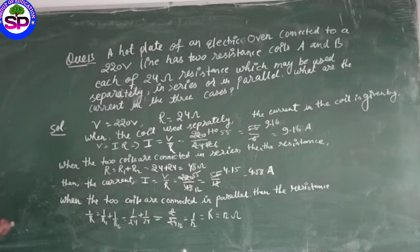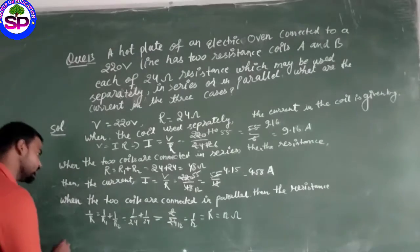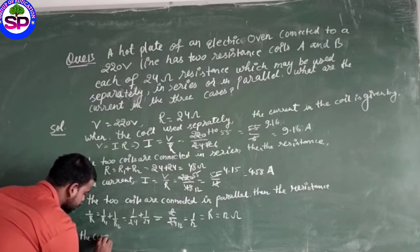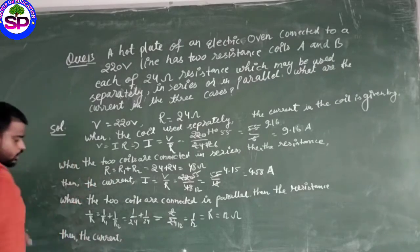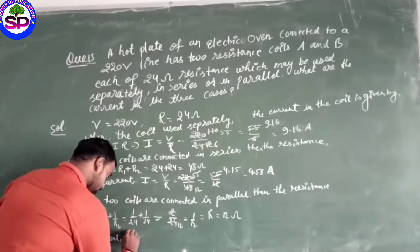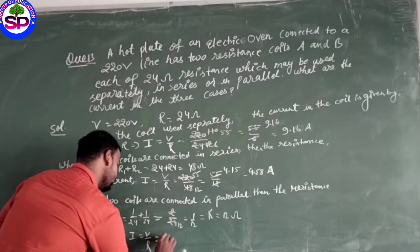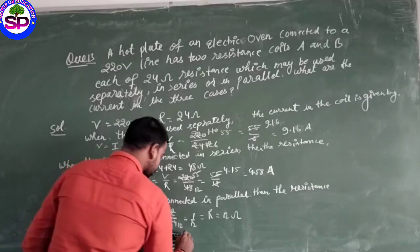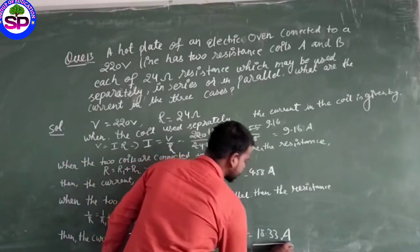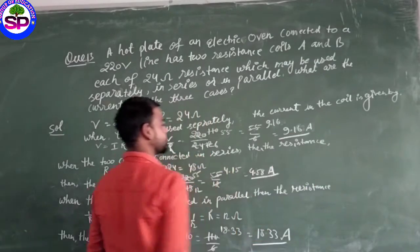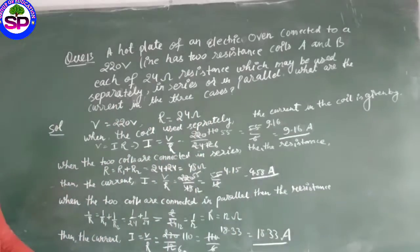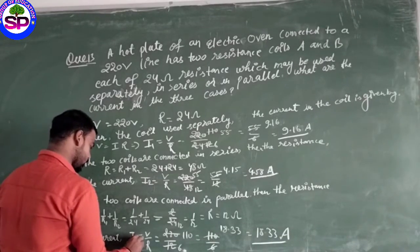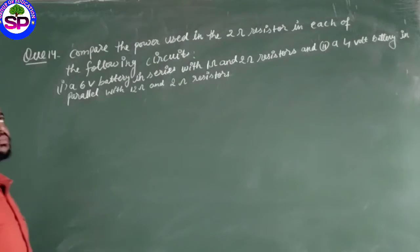Then the current I equals V upon R, V is 220 upon 12. So this is the third case, this is the second case, this is the first case. These are the three cases.